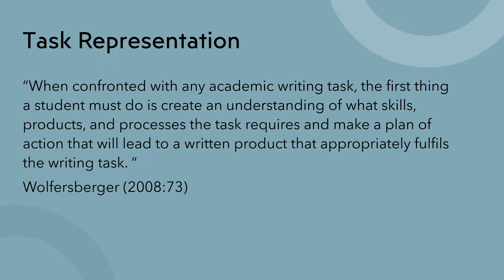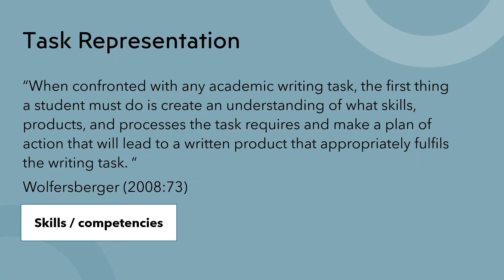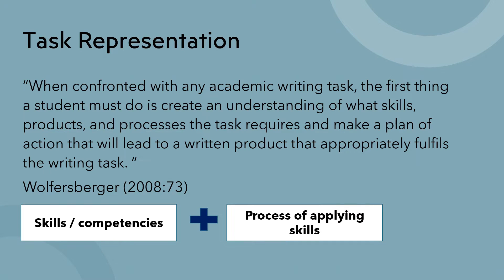Wolfersberger defines task representation in the following way: when confronted with any academic writing task, the first thing a student must do is create an understanding of what skills, products and processes the task requires, and make a plan of action that will lead to a written product that appropriately fills the writing task. Wolfersberger is not just talking about the skills and competences students have, but also the way they're going to apply those skills and what the finished product needs to look like.